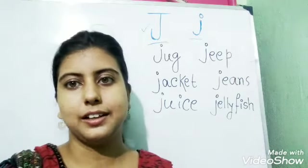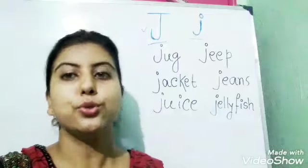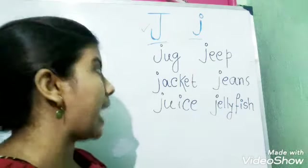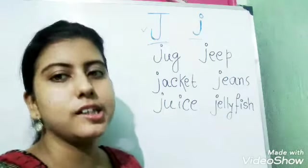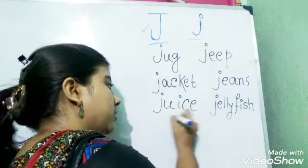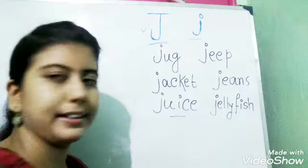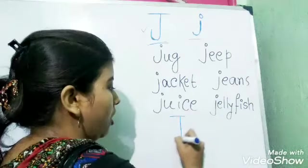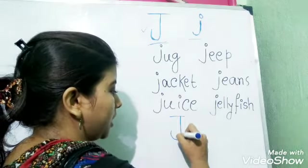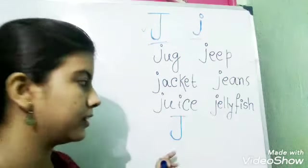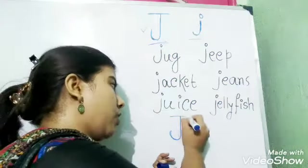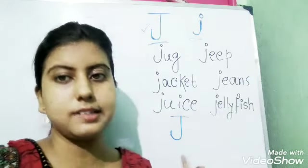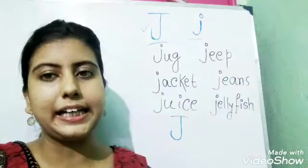First we will see how to write J. To write capital J, I will draw a straight horizontal line, and then I will draw a curve like this. A straight horizontal line, then a curve. Follow these steps to write J.